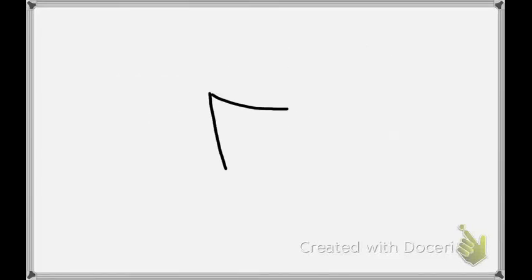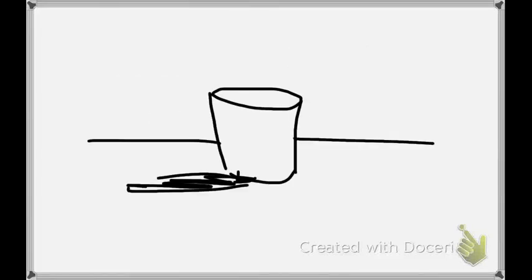What is a variable? A variable is kind of like a bucket with a label. In this case, the label is X.